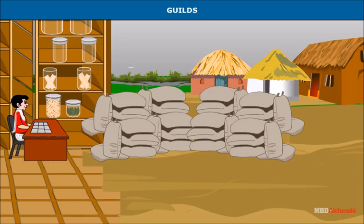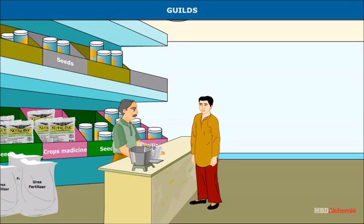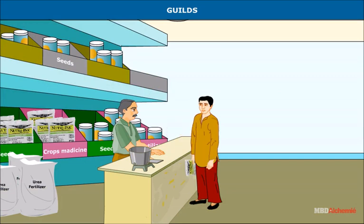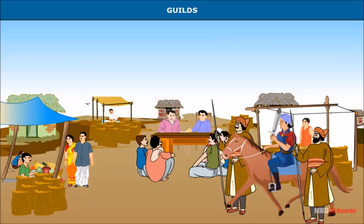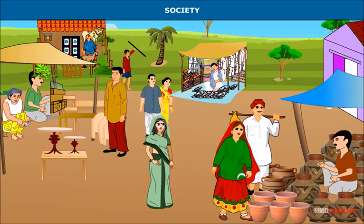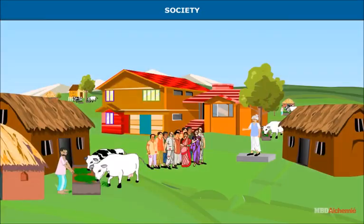The Jatakas refer to 18 guilds. Each guild laid down rules and regulations for the conduct of its members. They monitored the quality of the finished product and standardized prices. They also acted as bankers, financers, and trustees. Sometimes the guilds even maintained armies and helped the king in times of need.